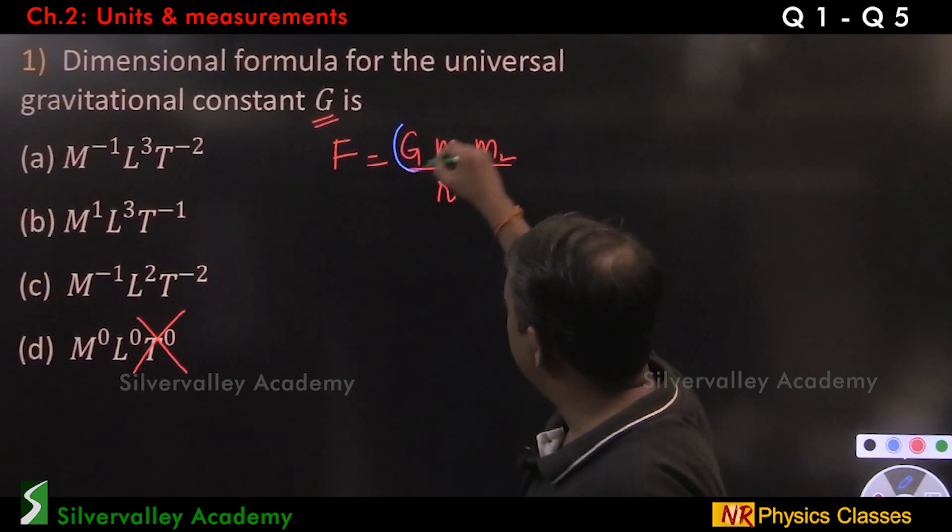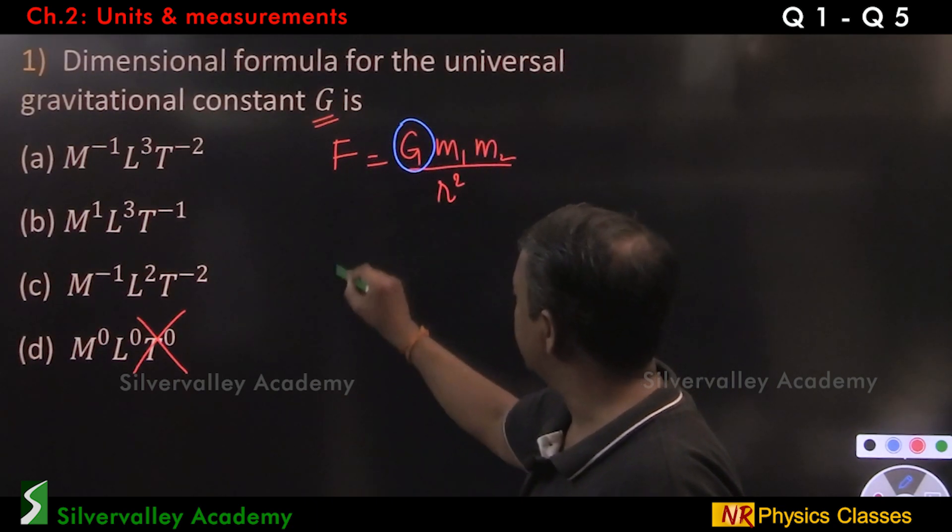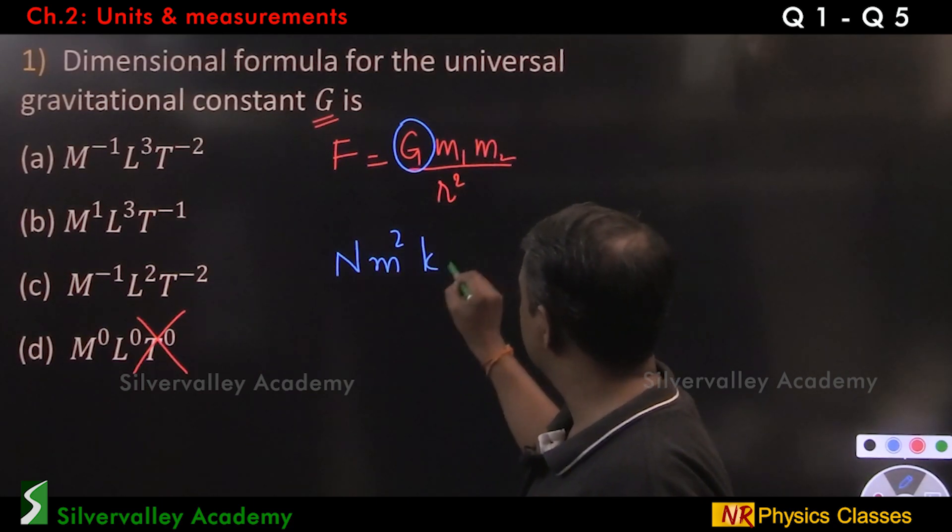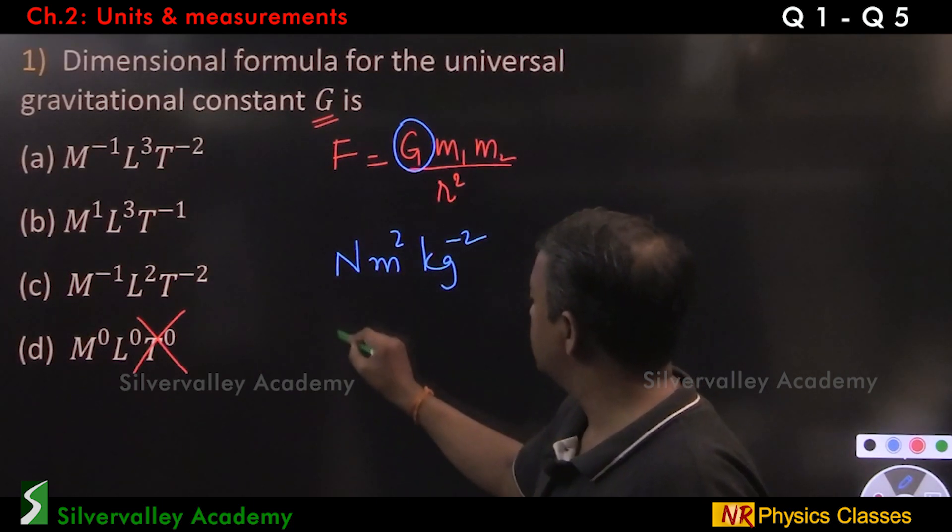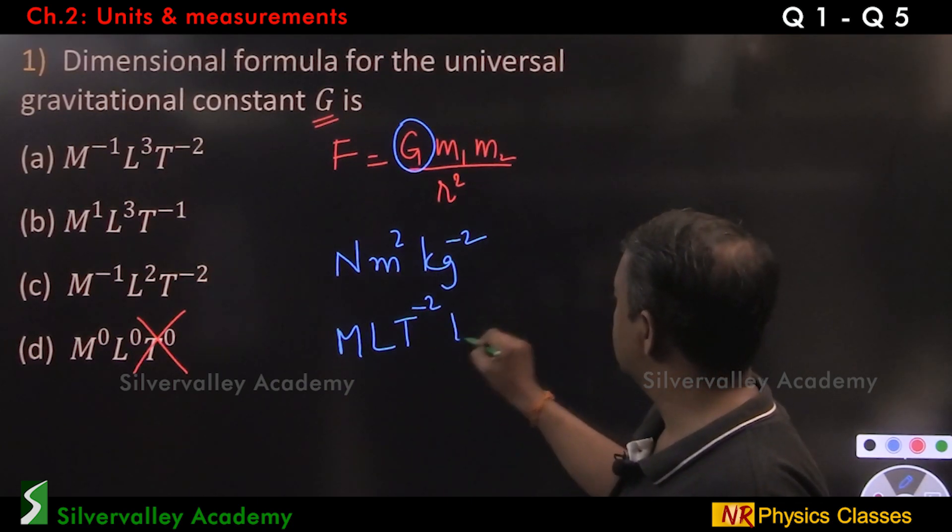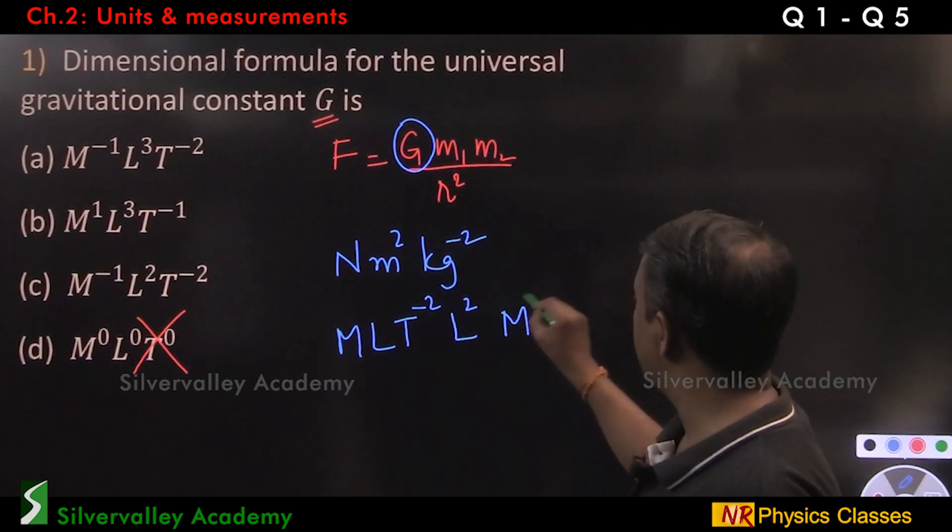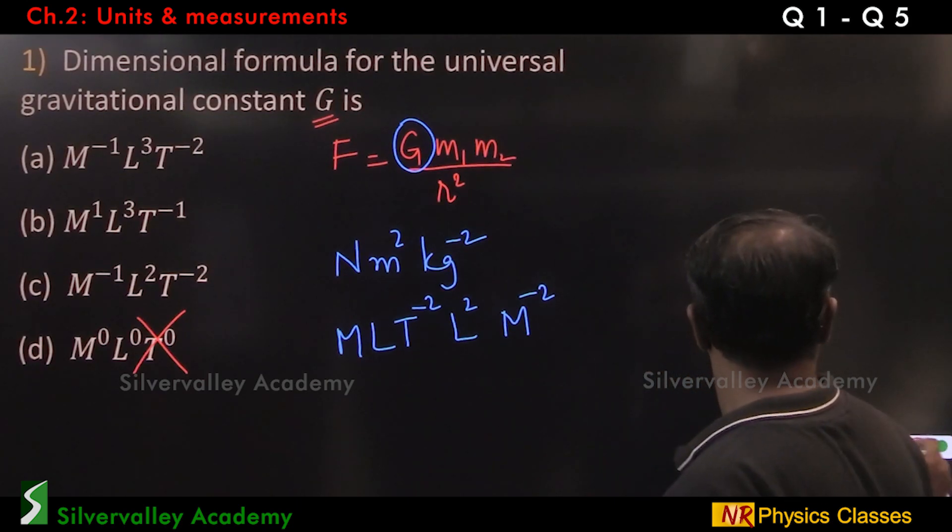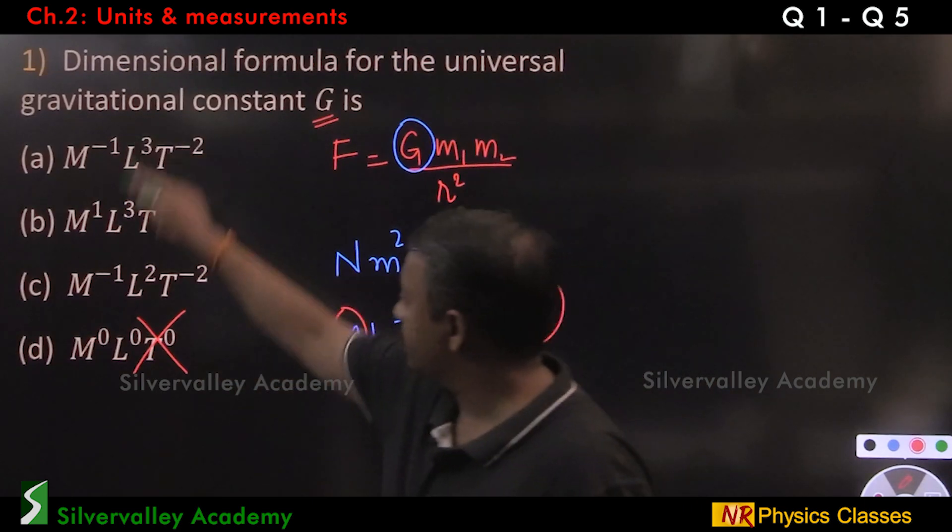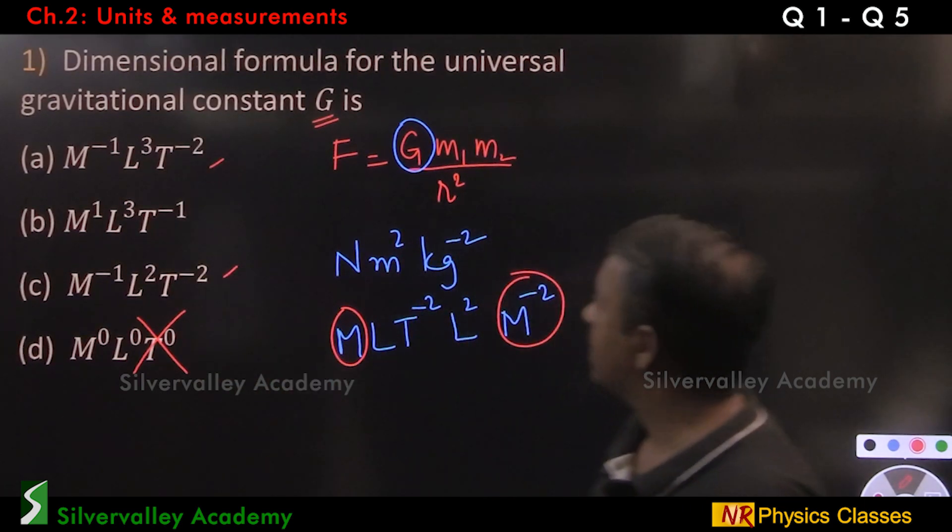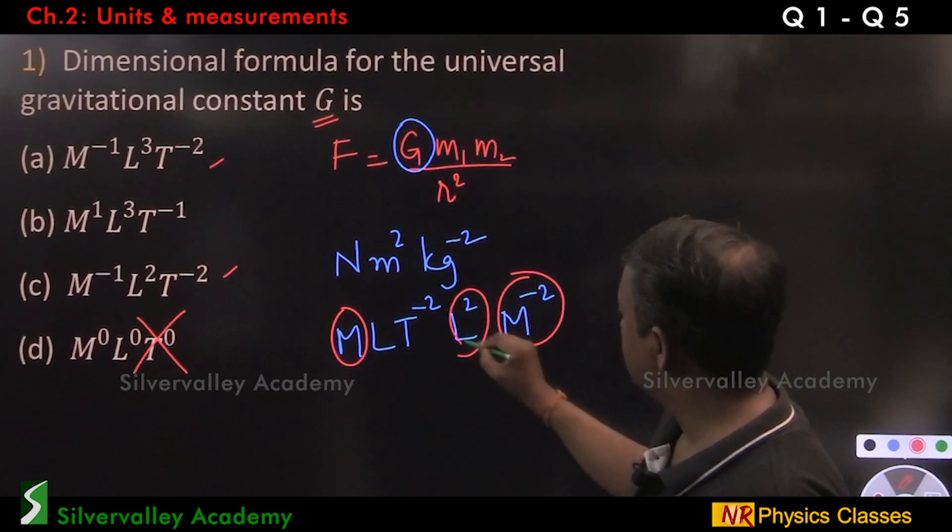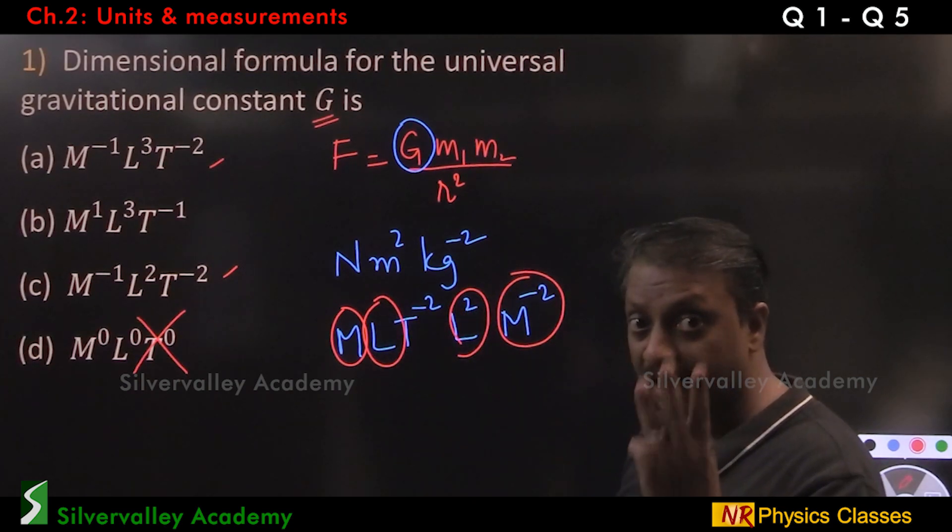Now, G is Newton meter square per kg square. Newton is M L T minus 2. This is L2. This is M minus 2. Now, these two gives M minus 1. Next, L. L2 and then L gives L3.